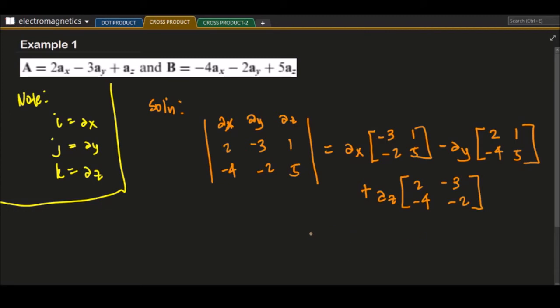We just get the determinants of our 2 by 2 matrix. So we have negative 3 times 5 minus negative 2 times 1. This is a sub x.